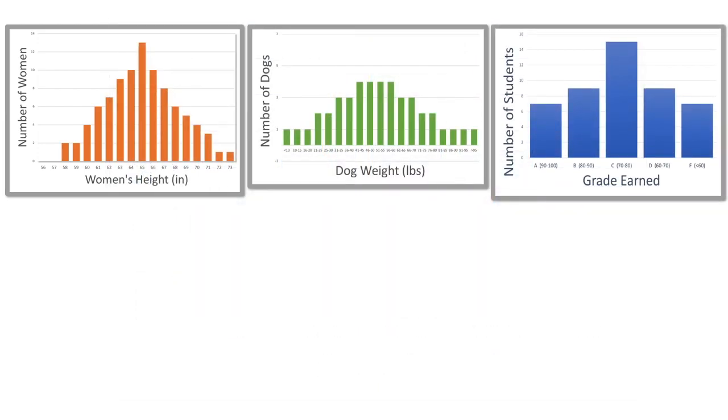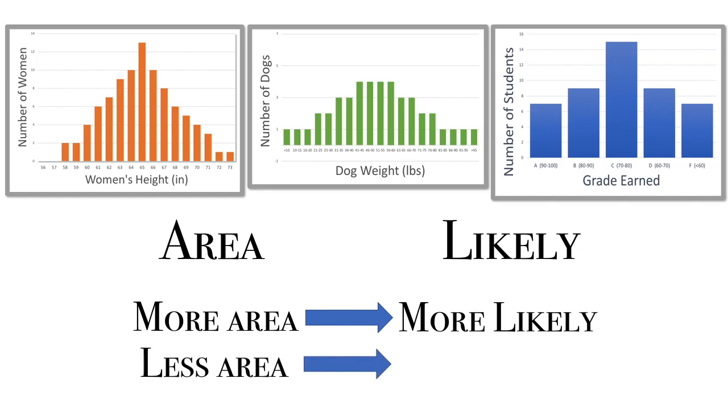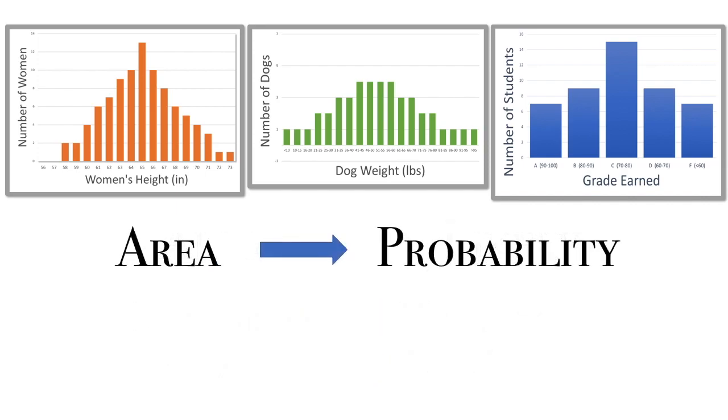So I hope you've been hearing me say a few words over and over again. Area and likely. The more area means something is more likely. Less area means something is less likely. In general, we could say that area tells us about probability. And this is where the bell curve comes in.